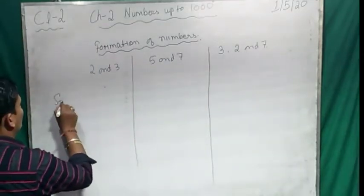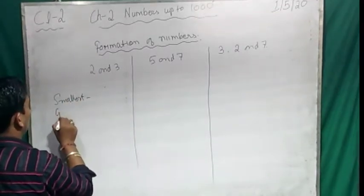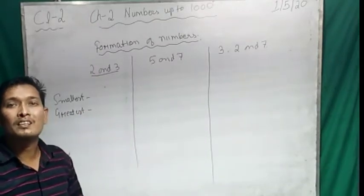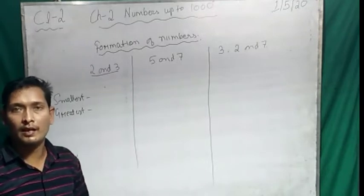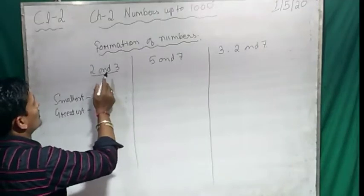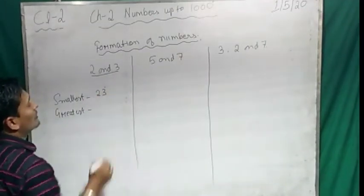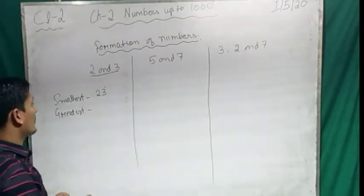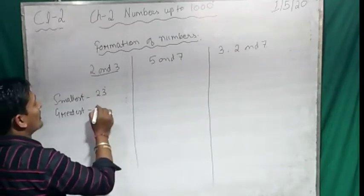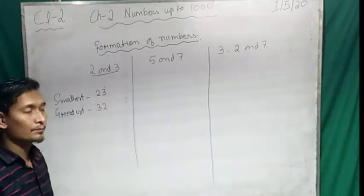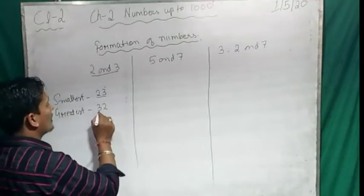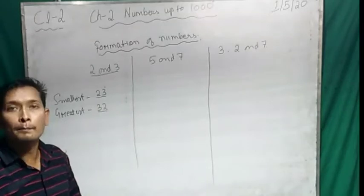Let's take an example. Two numbers are given and we have to form the smallest number and greatest number. If we are forming the smallest number, we will choose the smaller one first — that is 2 — then 3. So the smallest number is 23. And if we are forming the greatest number, we start with the larger number — 3 — then 2. For smallest, start with the smaller digit; for greatest, start with the greatest digit.